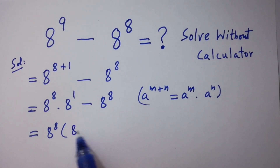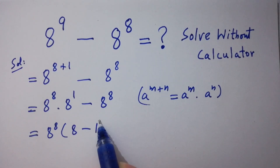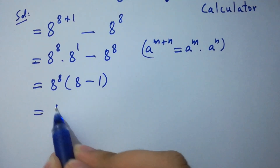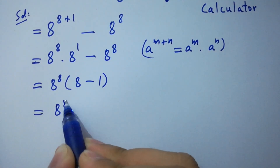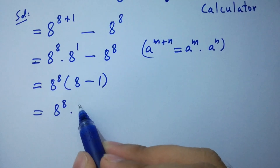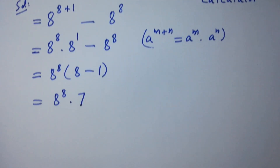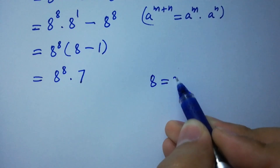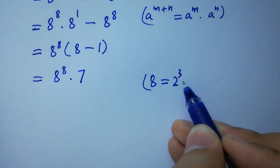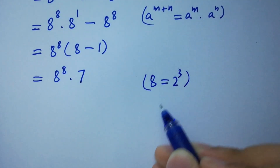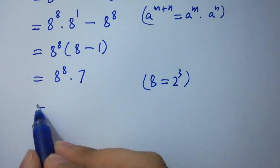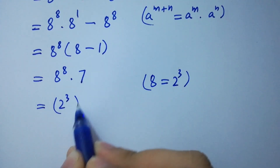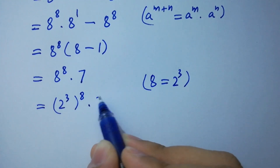We have 8 to the power 8 times (8 minus 1), and 8 minus 1 is 7. So we get 8 to the power 8 times 7. As 8 equals 2 cubed — 2 times 2 is 4, 4 times 2 is 8 — we have here 2 cubed to the power 8, times 7.